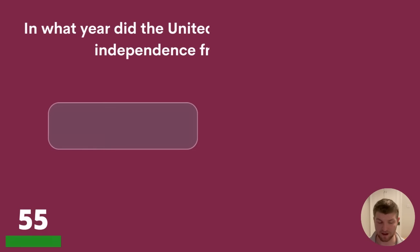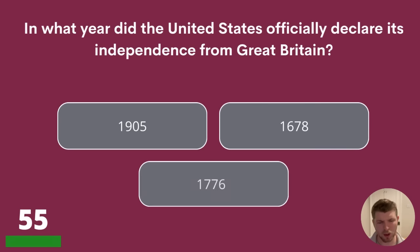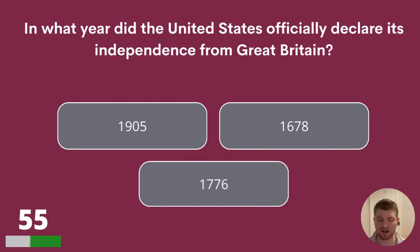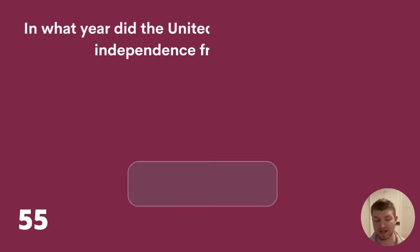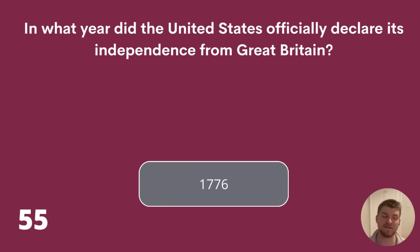Question 55. In what year did the United States officially declare its independence from Great Britain? 1905, 1678, or 1776? The answer is 1776.